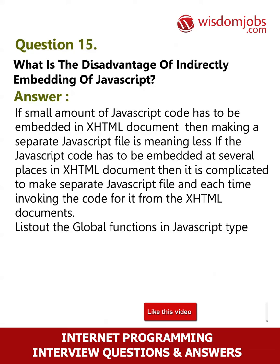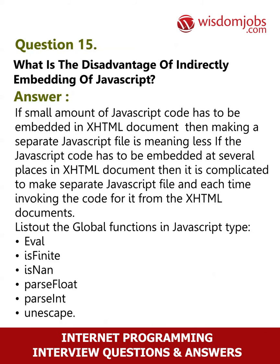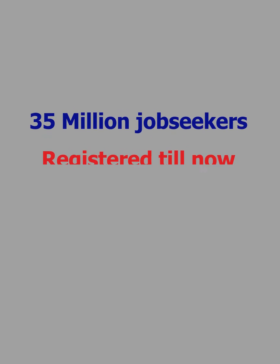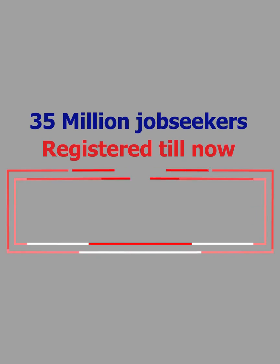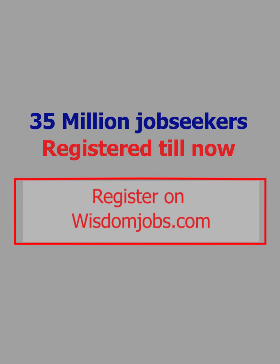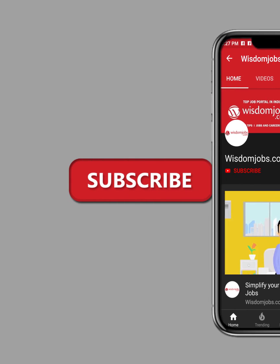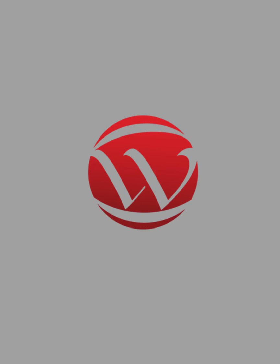List out the global functions in JavaScript. JavaScript global functions include: eval(), isFinite(), isNaN(), parseFloat(), parseInt(), and unescape().